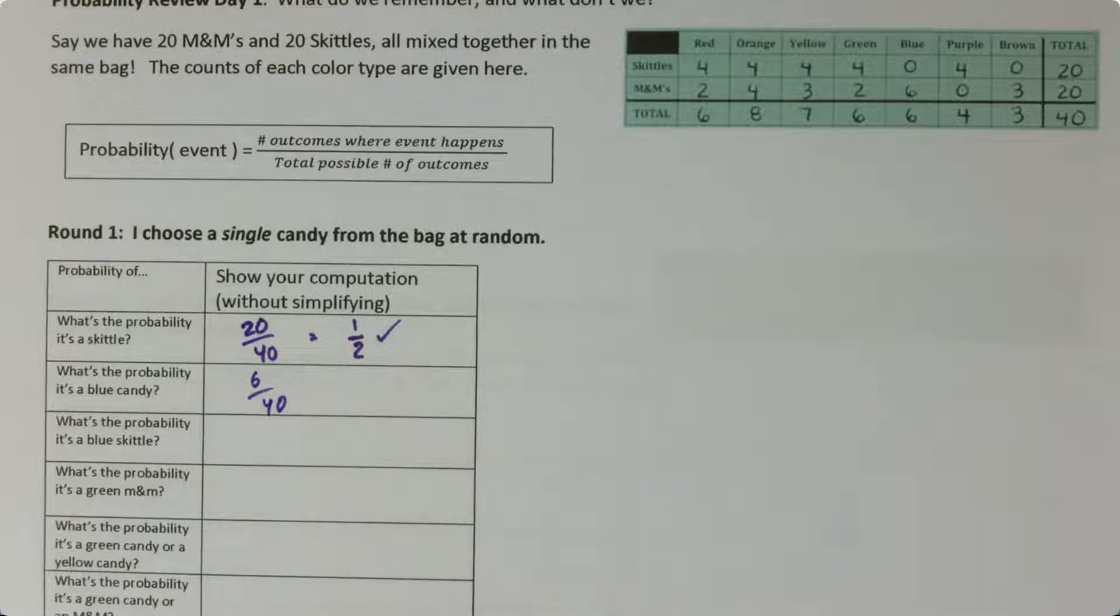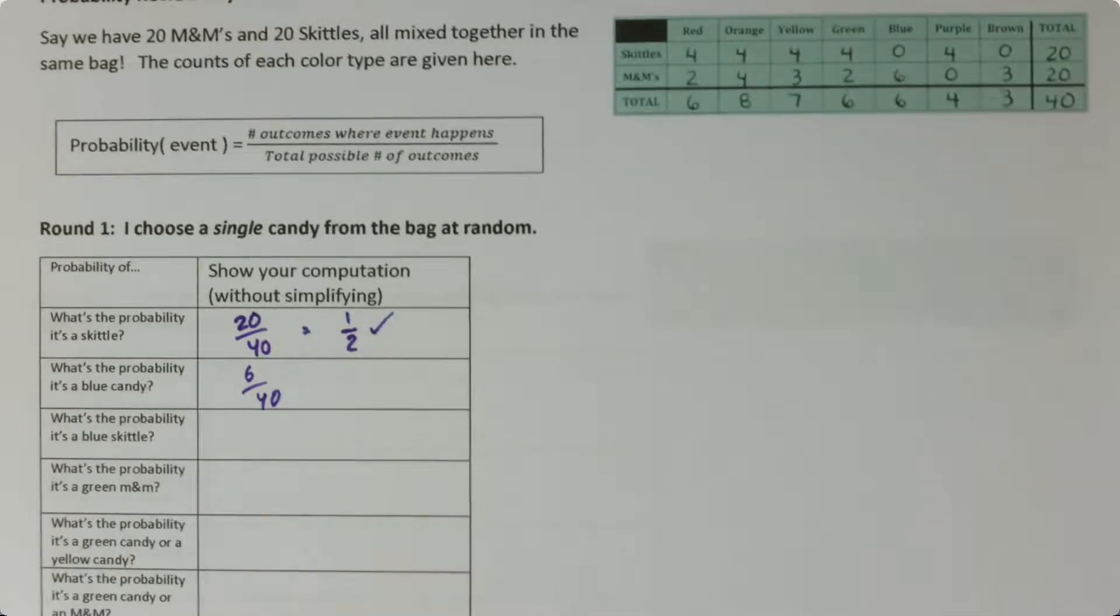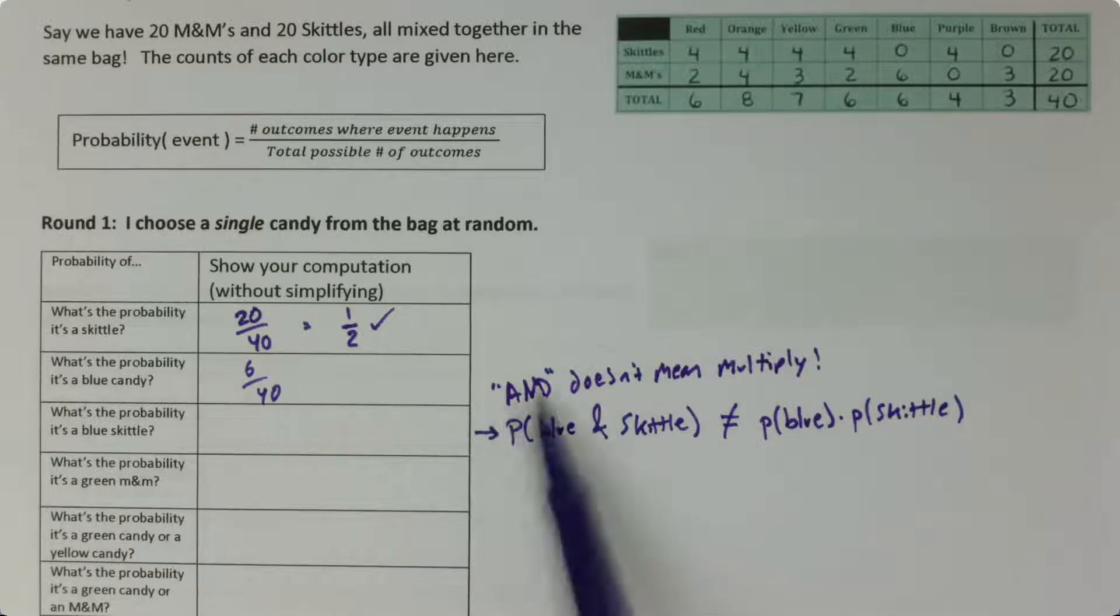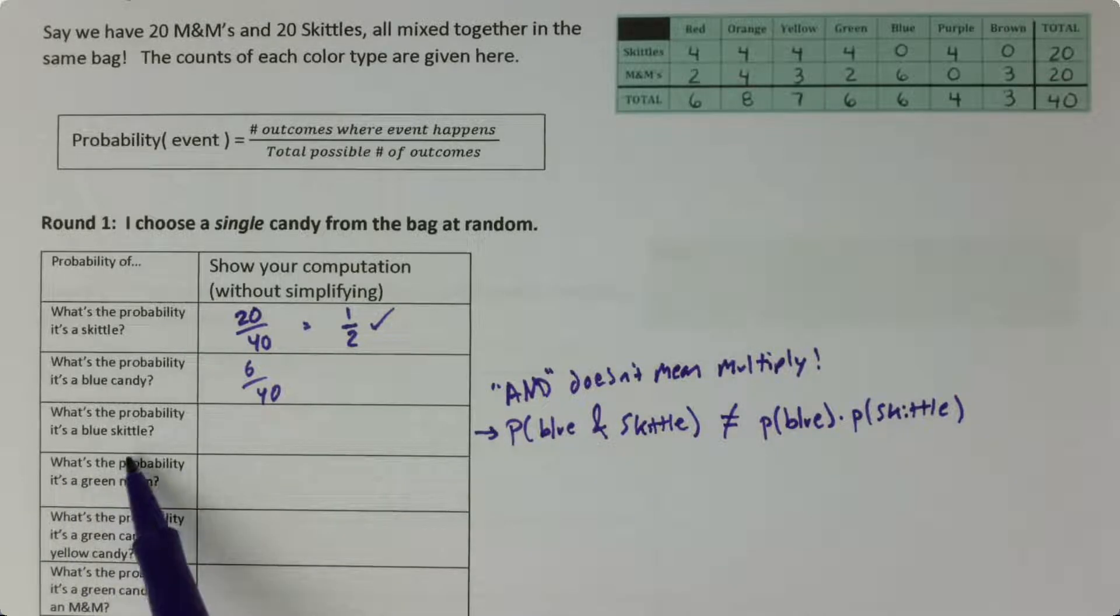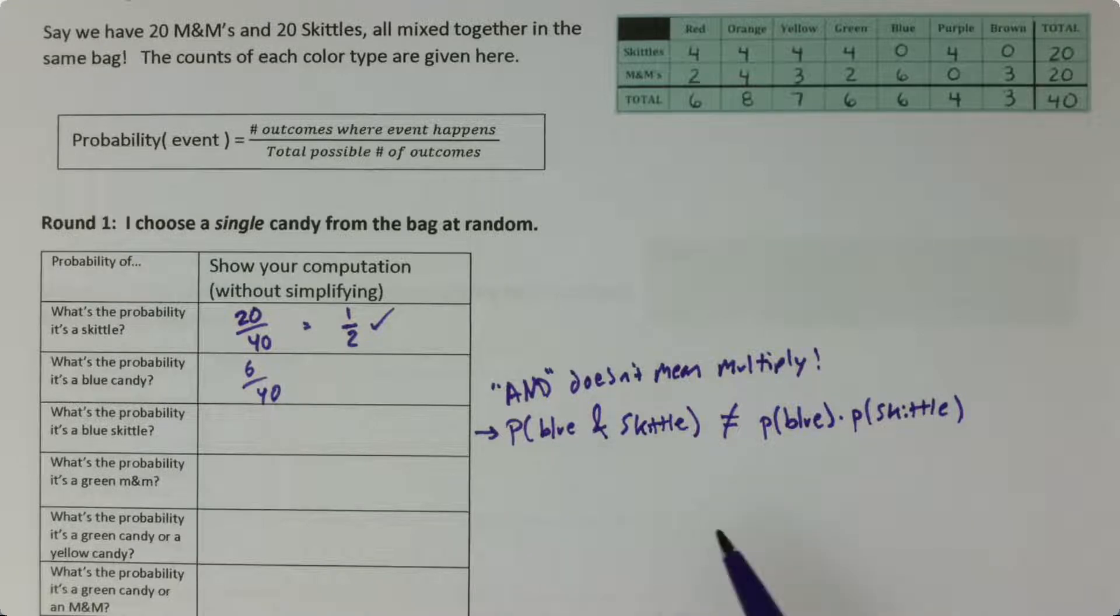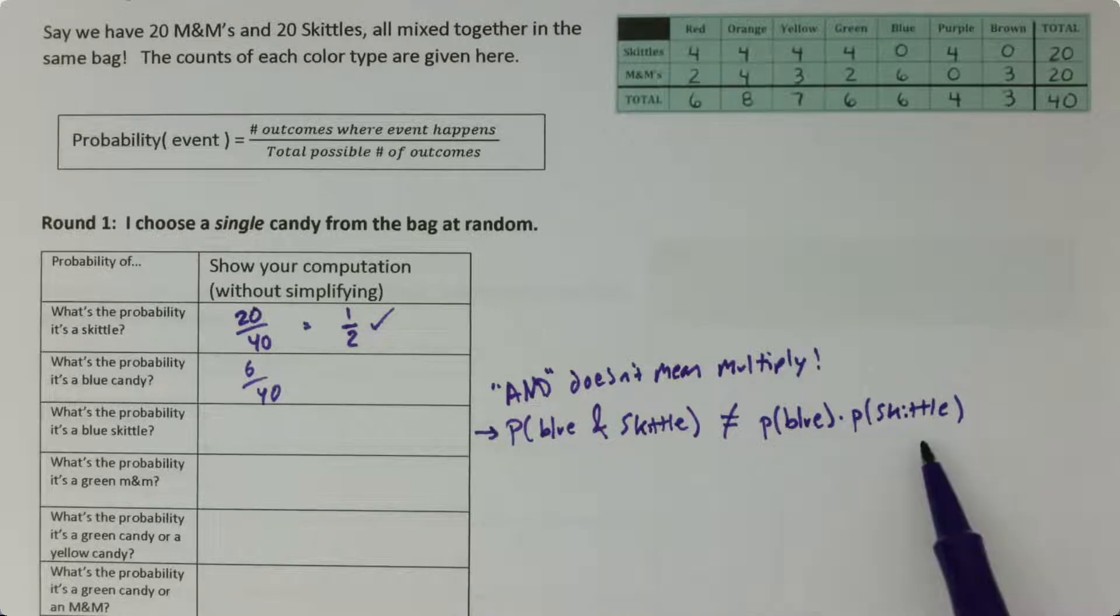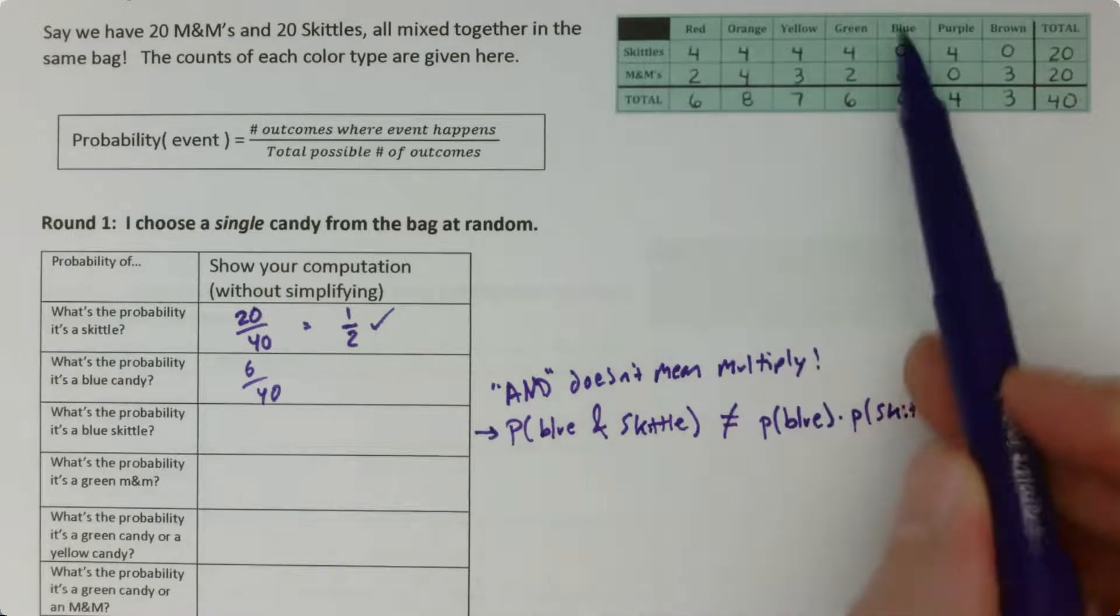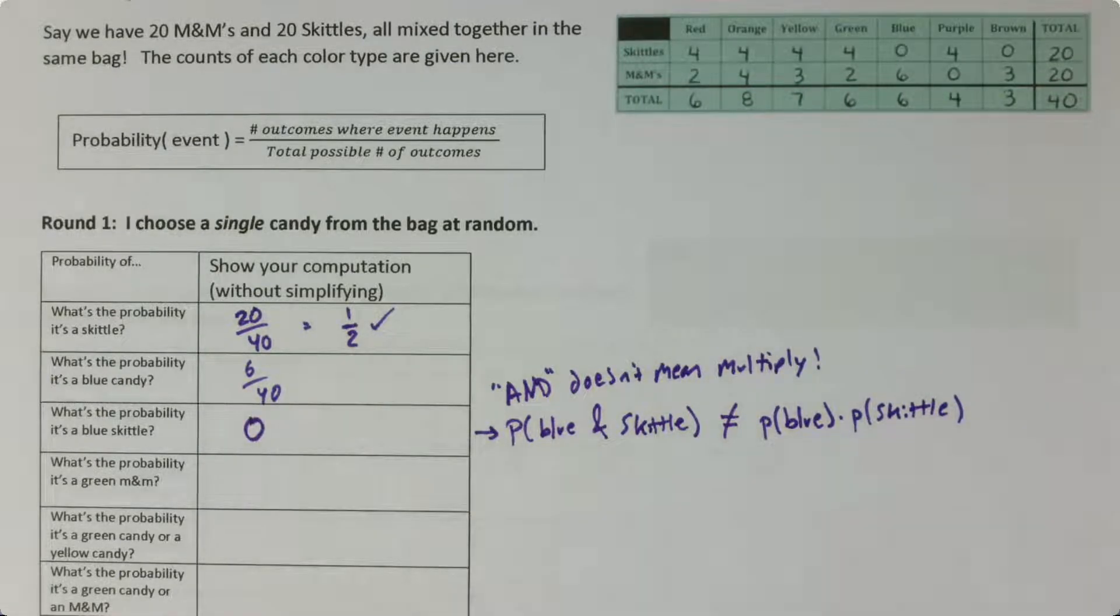Okay, what's the probability it's a blue Skittle? So time to unlearn a thing you might have learned in the past. Some courses, when they go for probability, teach kind of rules, like certain keywords like AND tell you particular procedures like multiply. And here we can see the probability of a blue Skittle. We could think about that as saying what's the probability the candy we drew is blue and also the candy that we drew is a Skittle. We just found the probability of being a Skittle and the probability of being blue. So if you'd learned that AND means multiply, you could multiply those together, but that would be silly because as we can see up here there are no blue Skittles. So the probability of us drawing a blue Skittle is zero because there aren't any.